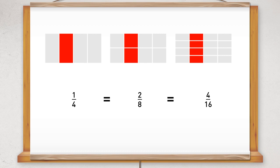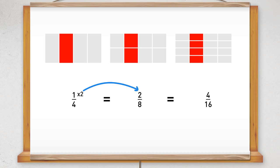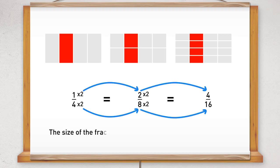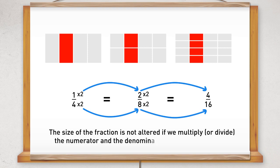If we look carefully at the one and two on the top of the fractions and four and eight on the bottom, we can see that if we multiply the one by two, we get two, and if we also multiply the four by two, we get eight. Or if we compare the two and four and also the eight and sixteen, we can see that if we multiply the two by two, we get four, and also if we multiply the eight by two, we get sixteen. So the size of the fraction is not altered if we multiply or divide the numerator and the denominator by the same number.